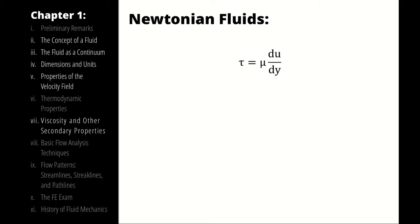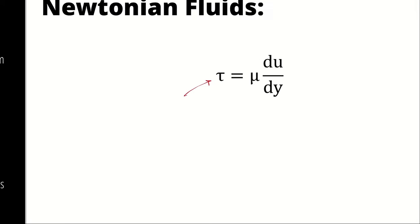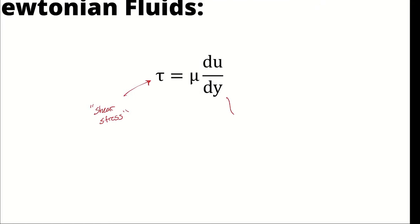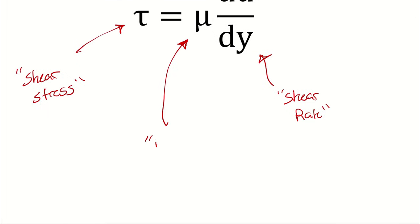The only real definition we need to make is that of a Newtonian fluid. In a Newtonian fluid, there is a linear relationship between shear stress and shear rate. The slope of that line, that linear relationship, we abbreviate with the Greek letter mu, and we call dynamic viscosity.